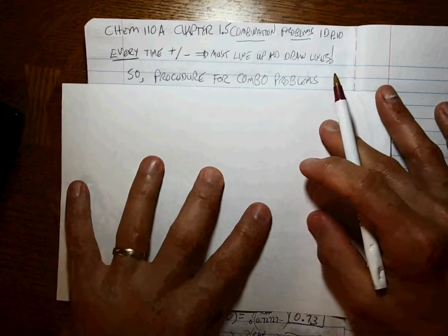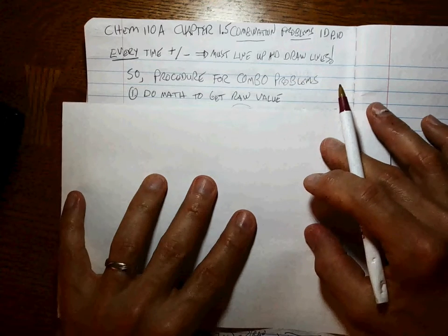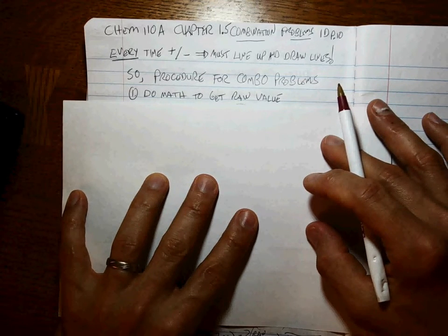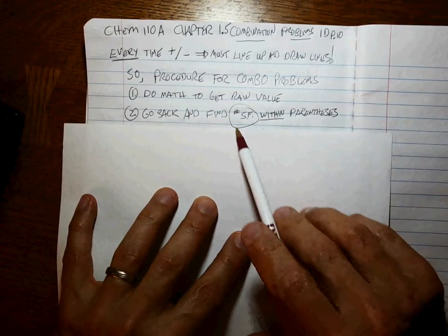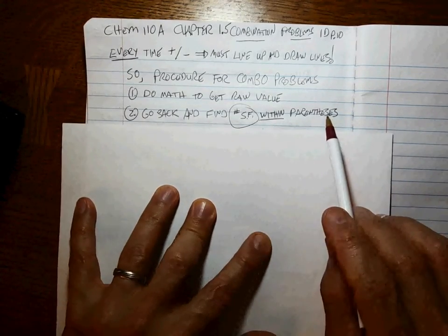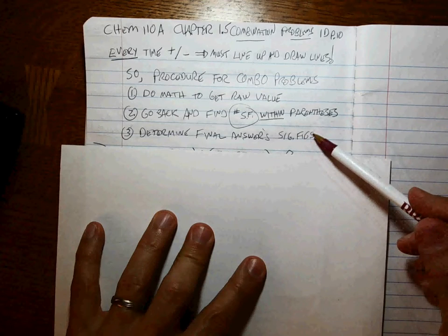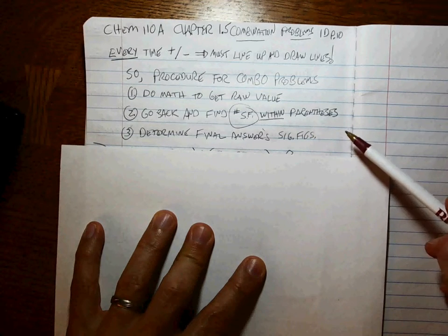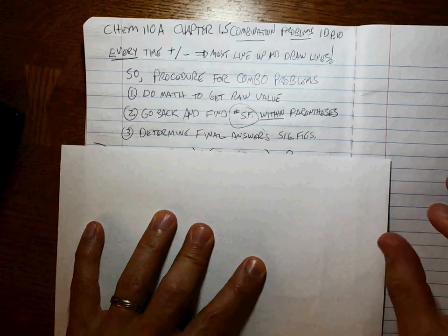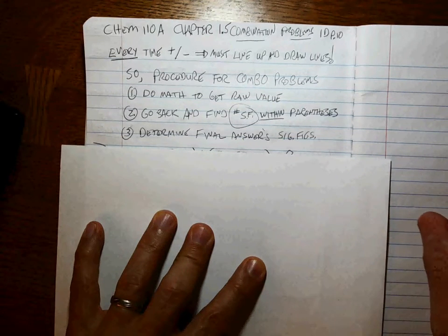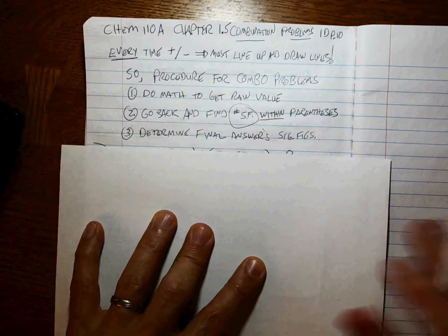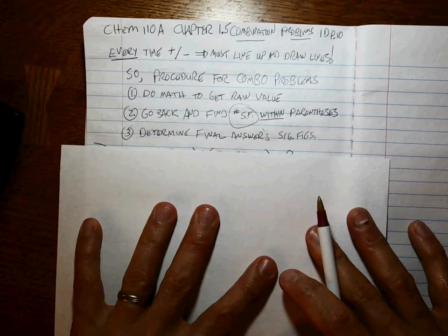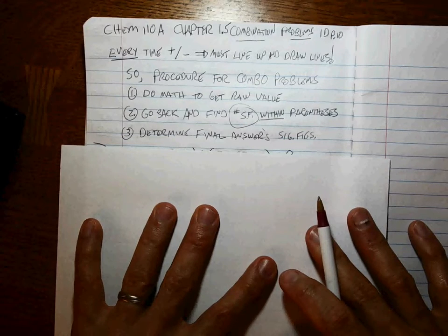Well, the procedure goes simple. Do the math. Get the raw value first. Then go back and find the number of sig figs within the parentheses of the problem. And then determine the final answer of significant figures. Basically, you're following the three rules that we've learned already for addition and subtraction, multiplication and division, and determining the number of sig figs in any measured number. So, as usual, easier to do problems than to talk about them, so let's go.